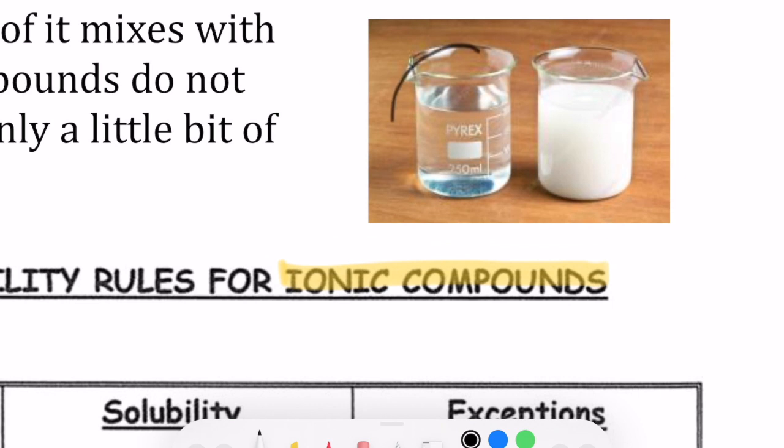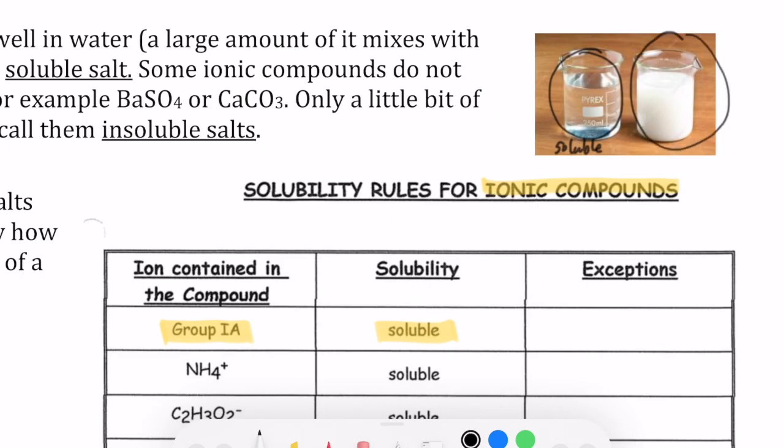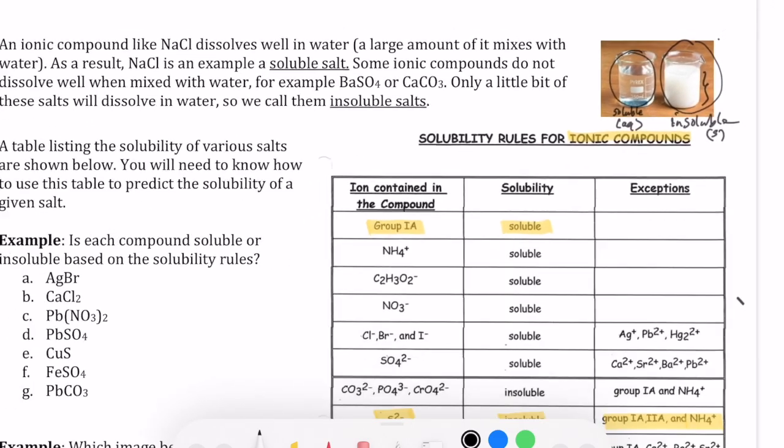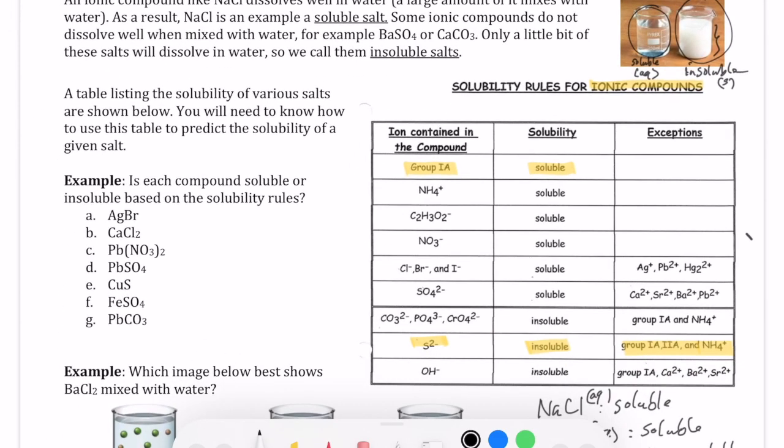So just to reiterate, this one right here is a soluble salt, and this one right here is insoluble. This one right here will be given symbol AQ. This one right here will be given symbol S. That cloudiness that you see inside that beaker is a sign that you have a lot of solid that's not dissolved.